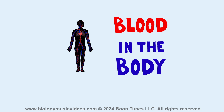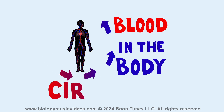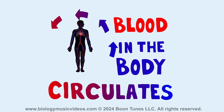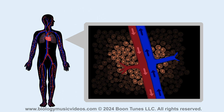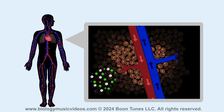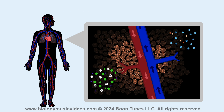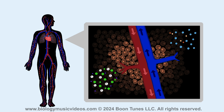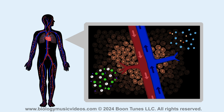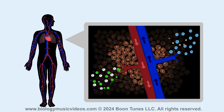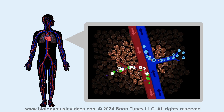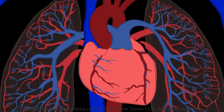Blood in the body circulates to transport products and to transport base. And they can move around by themselves, and so the bloodstream takes them where they gotta go.